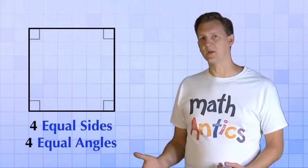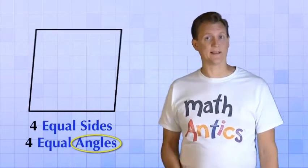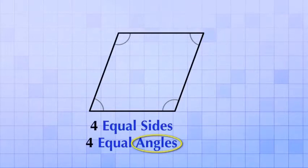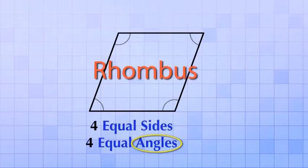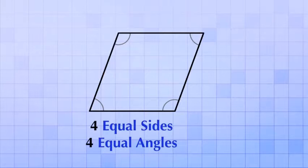what if instead of changing the sides, we had just changed the angles, like this? Ah, what we have now is called a rhombus. A rhombus is a quadrilateral that still has four equal sides, but it does not have four equal angles.